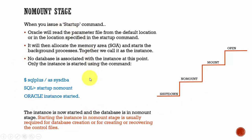If we have to start up a database in a no-mount stage, we can issue the command startup nomount. Using this, the instance will be started. We put the instance in a no-mount stage whenever we have to create a database, create a control file, or recover the control file. Whenever we need to do these three things, we will put the database in a no-mount stage.